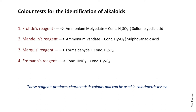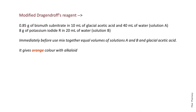The first color reagent is Fröhde's reagent, a mixture of ammonium molybdate and concentrated sulfuric acid, together called sulfomolybdic acid. Then comes Mandelin's reagent, a mixture of ammonium metavanadate and concentrated sulfuric acid, together called sulfovanadic acid. Third is Marquis reagent, a mixture of formaldehyde and concentrated sulfuric acid. Fourth is Erdmann's reagent, a mixture of concentrated nitric acid and concentrated sulfuric acid. The colors formed with these reagents are characteristic and can be used for colorimetric assay. A modified Dragendorff reagent is also used as a spray reagent for chromatography, giving an orange color with alkaloids.